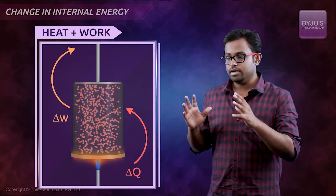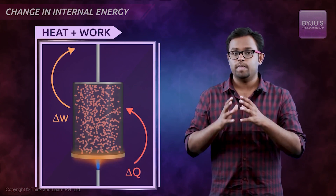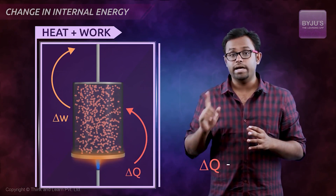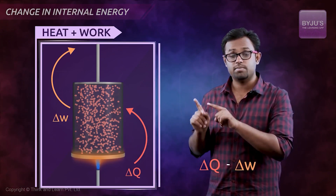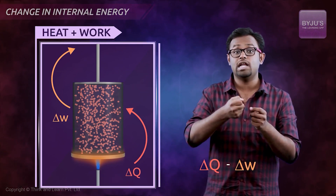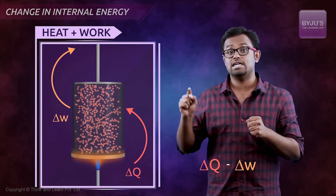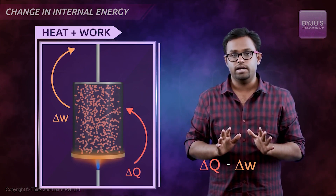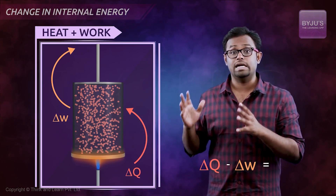Now if conservation of energy holds — which is true in almost all cases — then we can say that the heat given to the system delta Q, minus the work done by the system delta W, must be the energy which got stored in the system. That is the change in internal energy, which equals delta U. So delta Q minus delta W equals delta U.